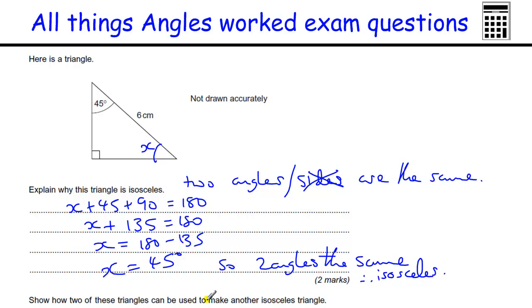Show how two of these triangles can be used to make another isosceles triangle. I haven't really left any room to do that, but I'll just draw a little diagram here. If we just put them back to back, then we know these are the same because these are both side 6, and therefore it is isosceles.